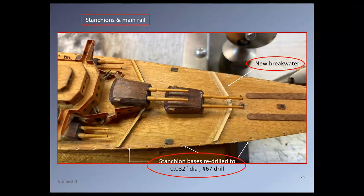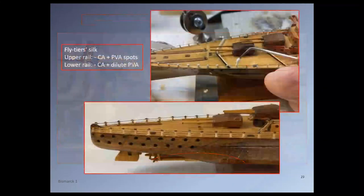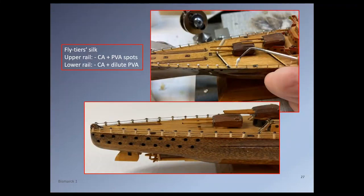Fly-tying silk was used for the rail. To mitigate against the potential for deterioration of CA glue in the long term, the rail was first secured with a tiny drop of CA glue, then a spot of dilute Weldbond PVA, which dries crystal clear, was added on top of the CA. The cap on the stanchions was replicated by a dot of PVA glue, which was then colored black with permanent black marker.